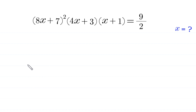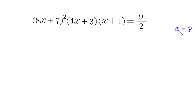Hello everyone, you are welcome. We will solve this very nice algebra equation: (8x+7)² times (4x+3) times (x+1) is equal to 9/2. Our job is to find all possible values of x.